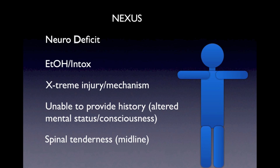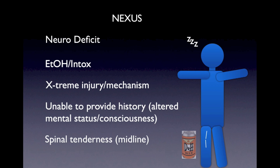To review the NEXUS mnemonic: N is for Neurodeficit, shown here by a patient moving one side. E is for ETOH or Intoxication. X is for an Extreme and Distracting Injury, shown here by a long bone fracture. U is for Unable to Provide History due to altered mental status or decreased consciousness. And S is for Spinal Tenderness in the Midline.